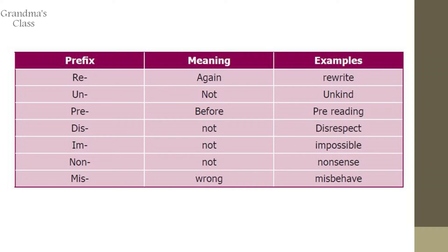We say 'unkind'. 'Pre' means 'before' — example: pre-reading. 'Dis', 'Im', and 'Non' all come with the meaning 'not' — examples: disrespect, impossible, nonsense. Next one is 'Mis', which means 'wrong' — example: misbehave.